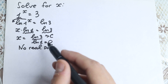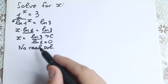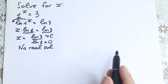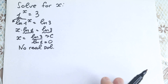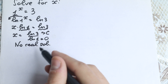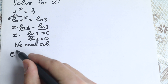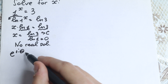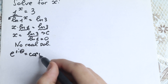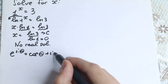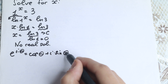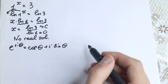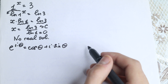What about complex roots? How can we find imaginary roots for 1 to the x equals 3? I want to start with Euler's identity: e to the power i times theta equals cosine theta plus i times sine theta. We are going to solve this using Euler's identity.